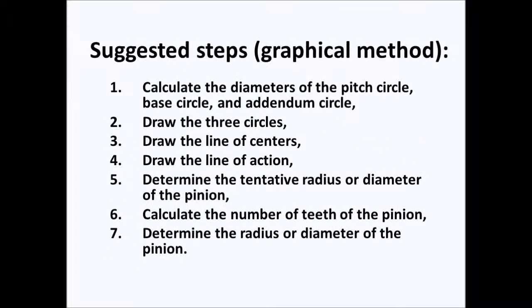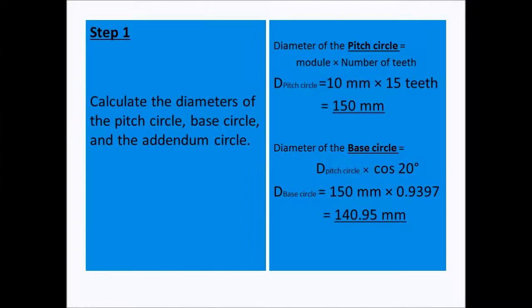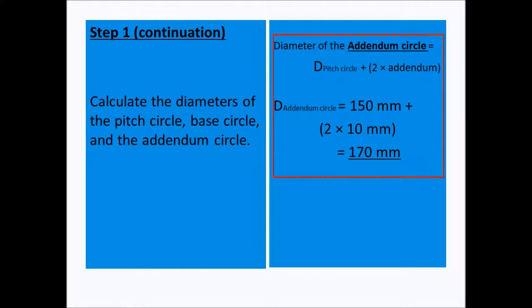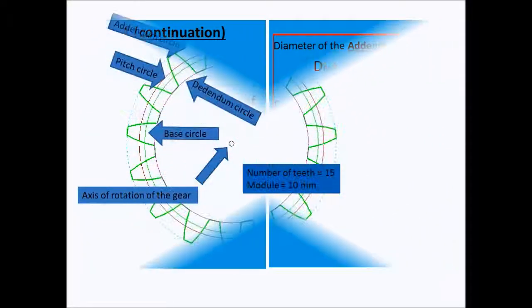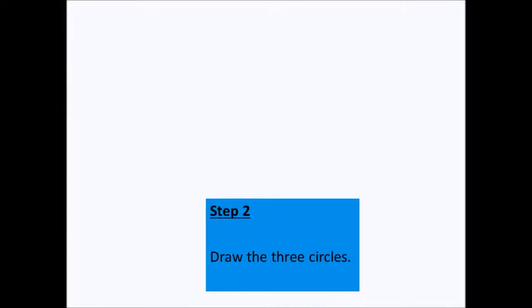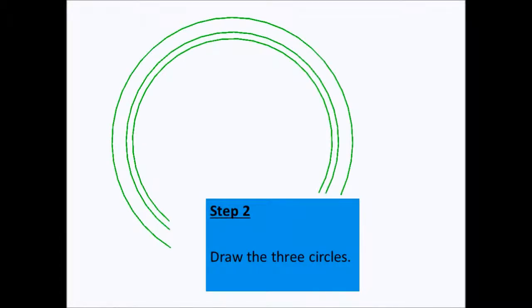As a first step we calculate the diameters of the pitch circle, the base circle, and the addendum circle. This figure shows the gear, so we can proceed with step number two where we draw the three circles: the addendum circle, pitch circle, and the base circle.